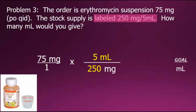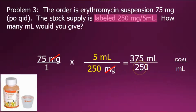Multiplying by 1 does not change the value, but it allows us to convert from one unit to the other. In fraction multiplication, common factors in the numerator and denominator — in this case milligrams — cancel out since they equal 1. We then multiply the numerators together to create the new numerator and multiply the denominators together to create the new denominator, arriving at 375 over 250.